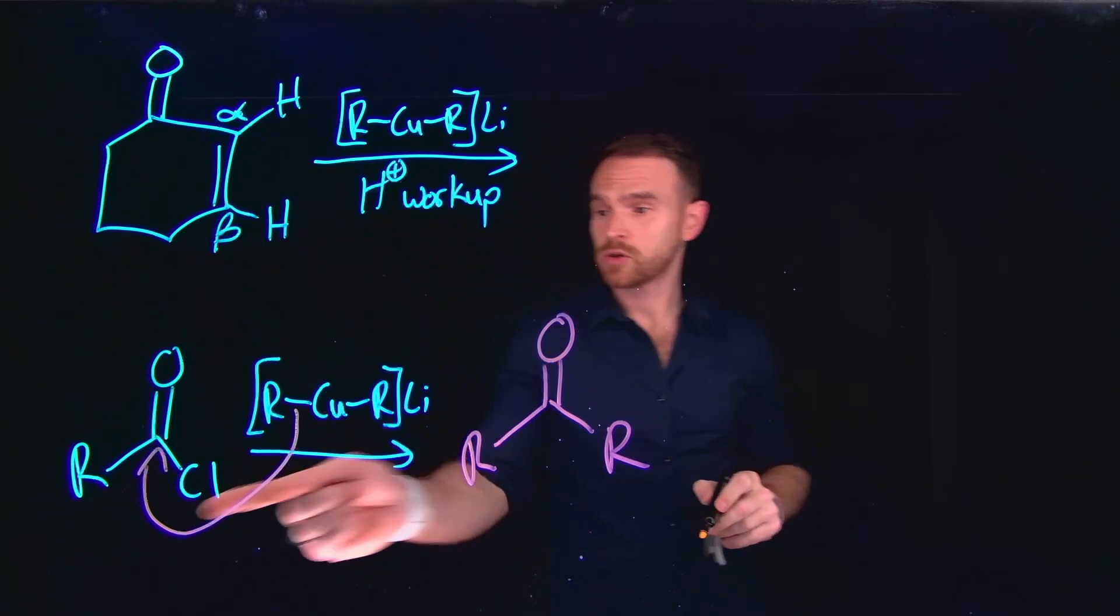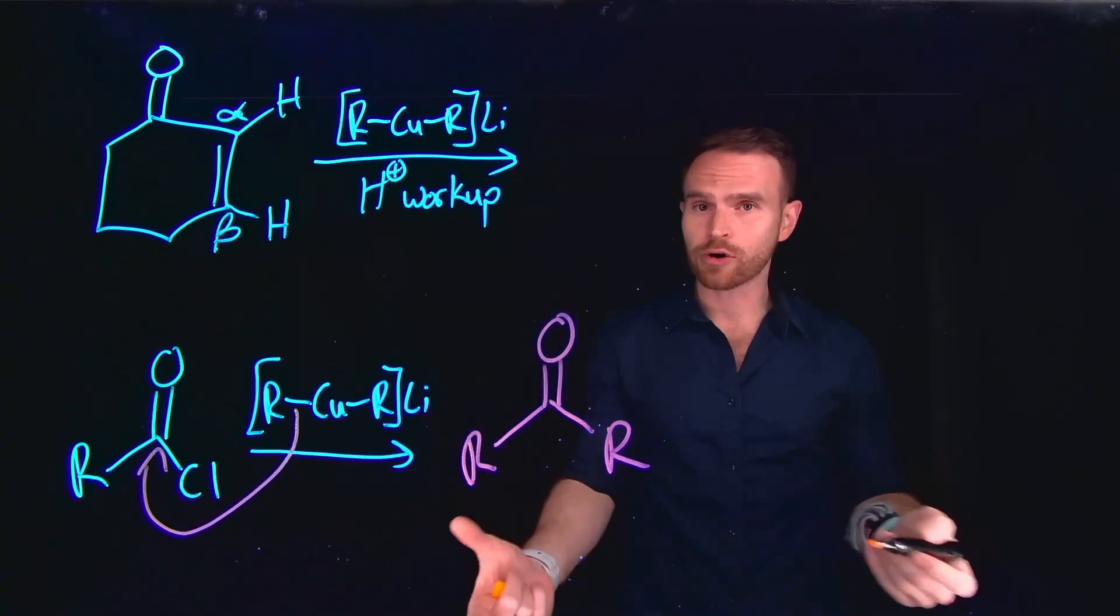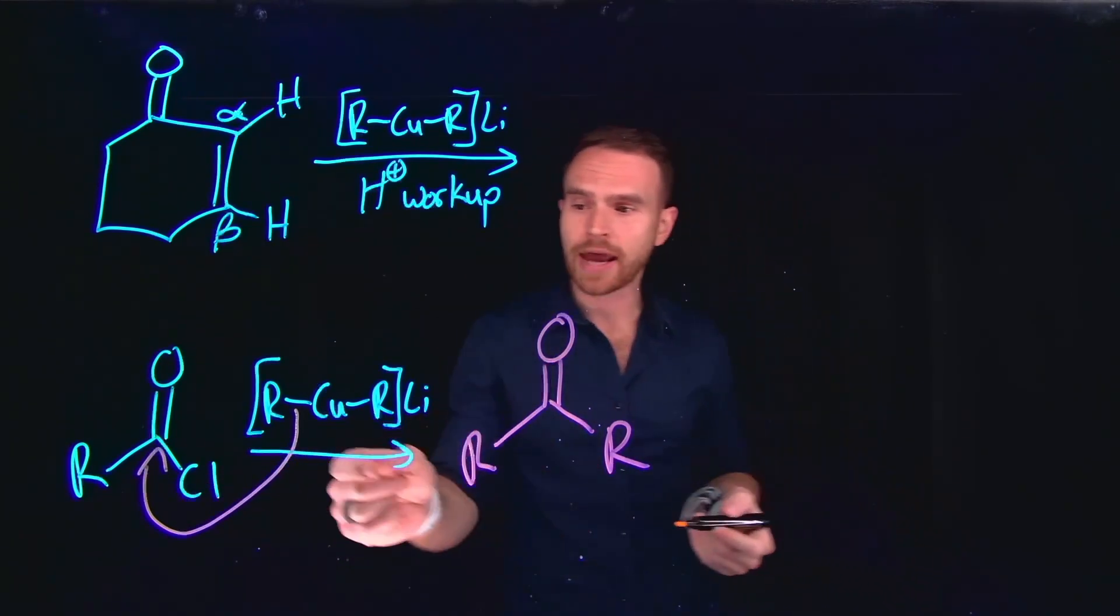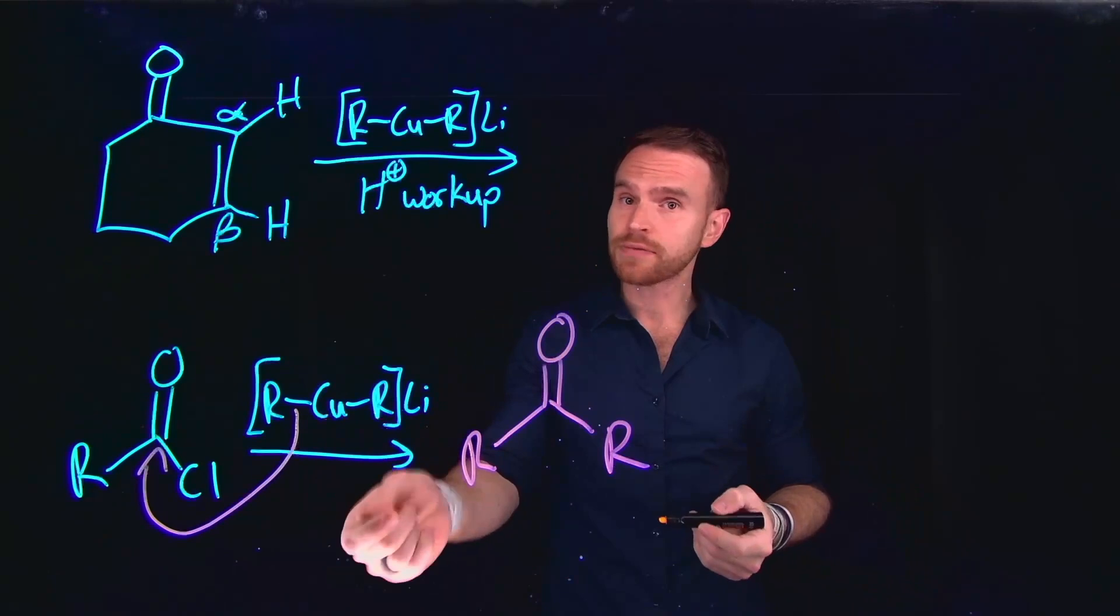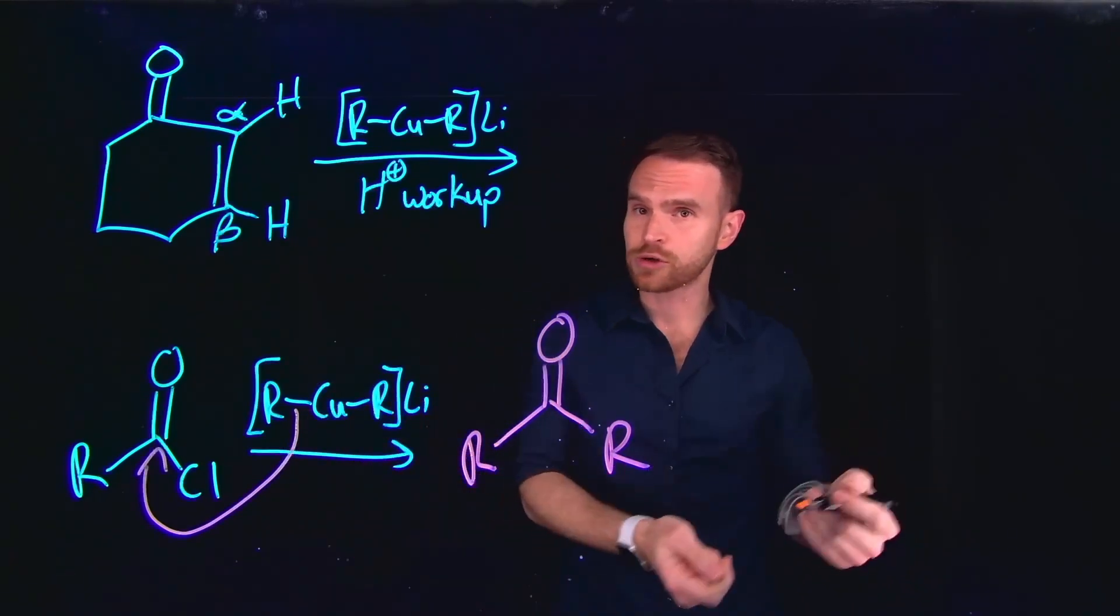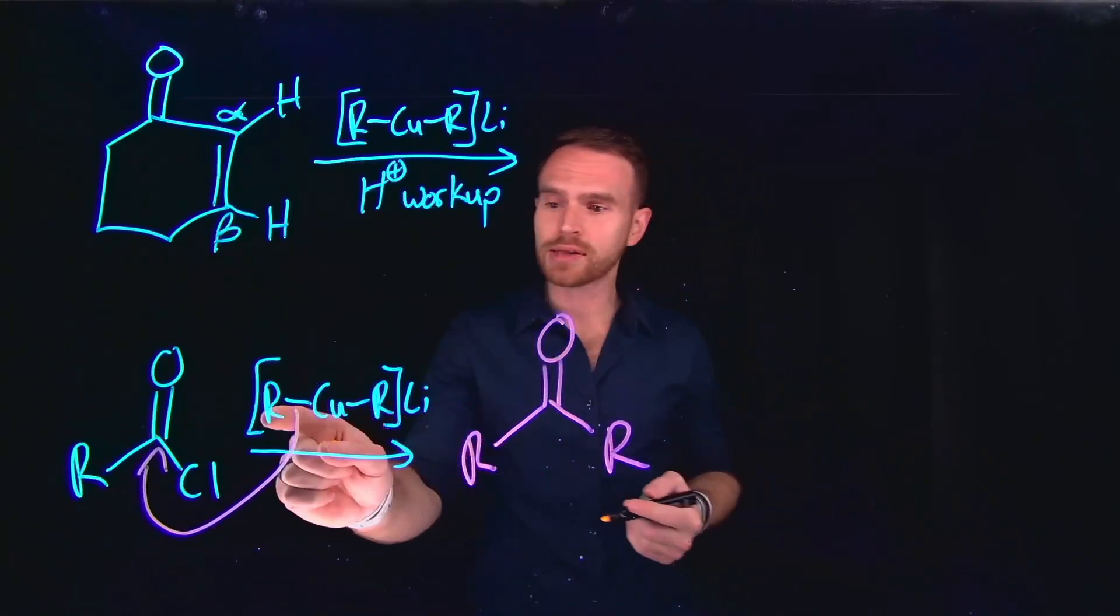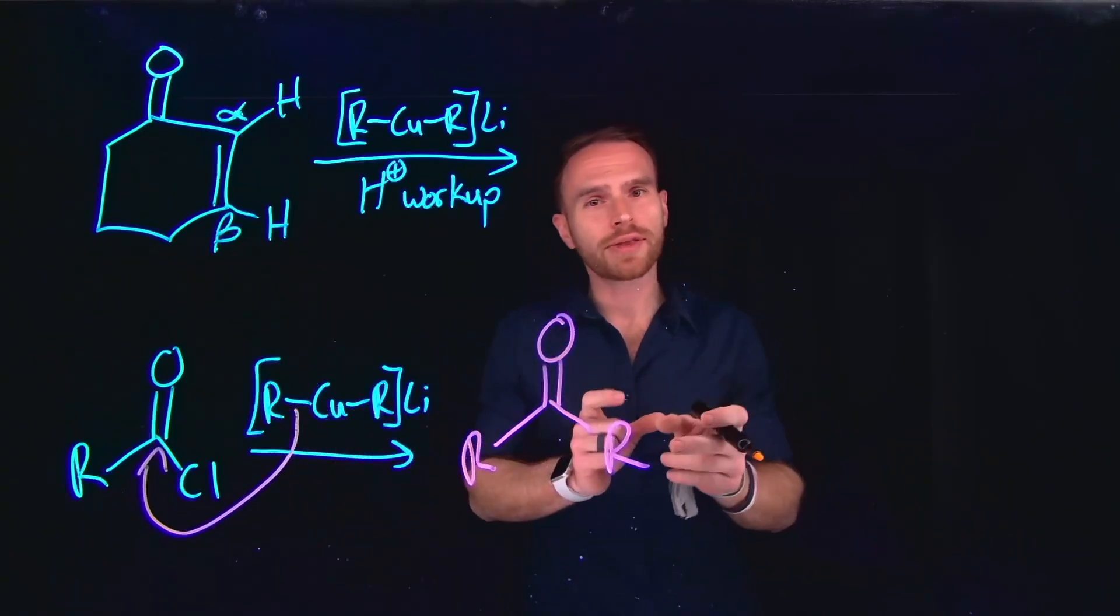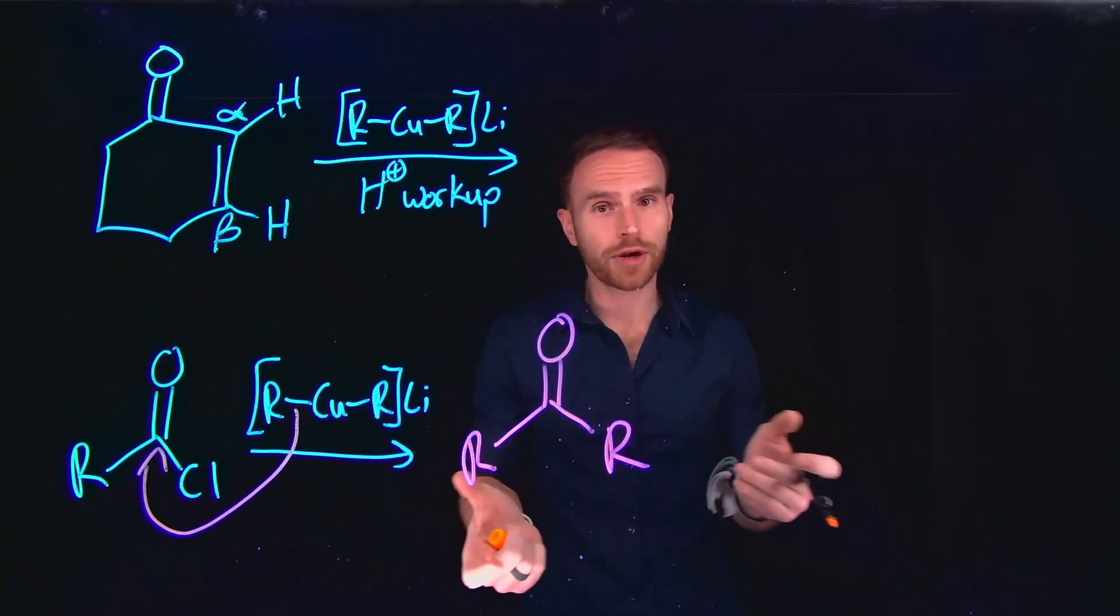this only adds to an acid chloride a single R group. And recall that what would happen if you added a Grignard reagent following acidic workup is that you would actually add two of these R groups to generate a tertiary alcohol. So importantly, these organo-cuprates are a little bit less nucleophilic than Grignard reagents.